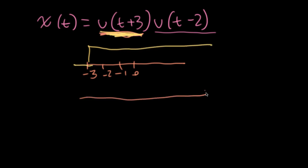Let's draw a similar axis for U of T minus two. So what's this? This is now a function that's starting at T minus two and going like this. So what is this?